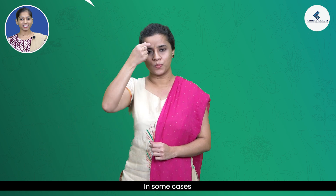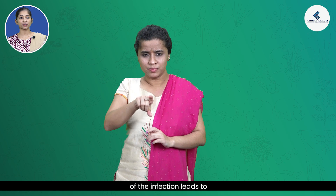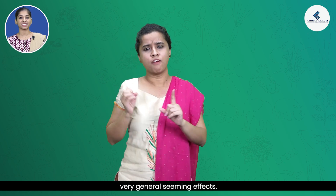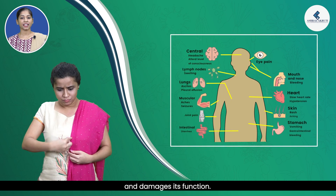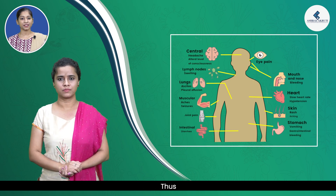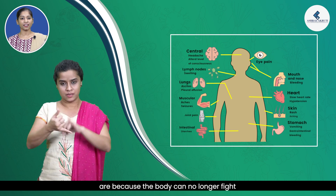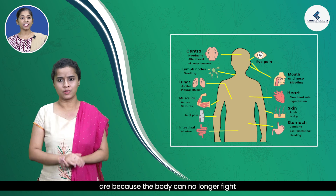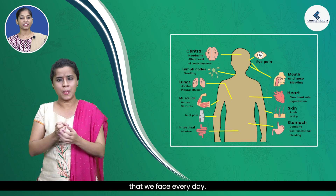In some cases, the tissue specificity of the infection leads to very general-seeming effects. For example, in an HIV infection, the virus goes to the immune system and damages its function. Thus, many of the effects of HIV-AIDS are because the body can no longer fight the many infections that we face every day.